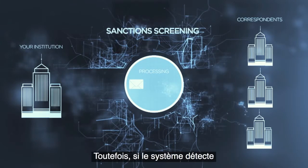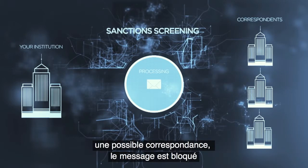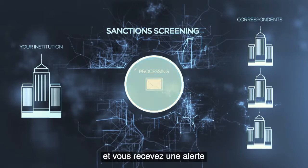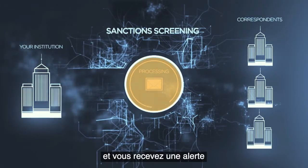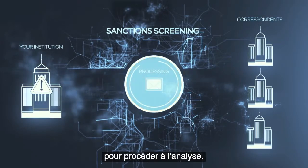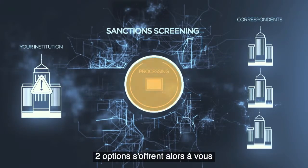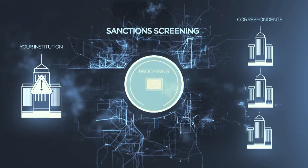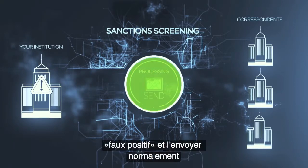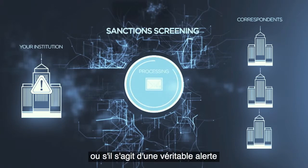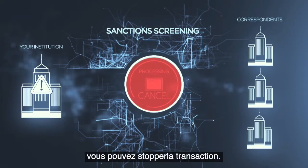However, if the system identifies a potential match, the message is held and an alert is sent to you for investigation. From there, you have two options: to either mark the message as a false positive and send it as normal, or if it's a true hit, you can block the transaction.